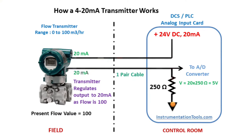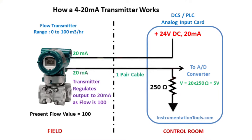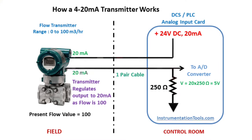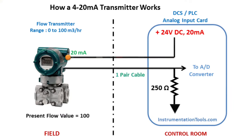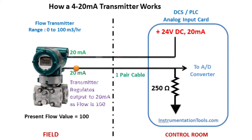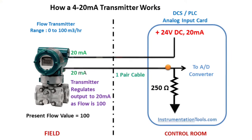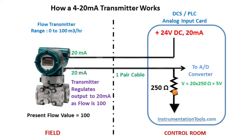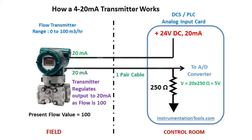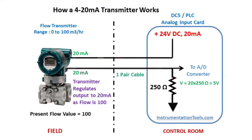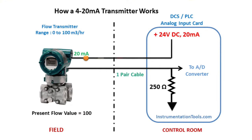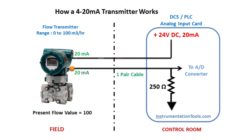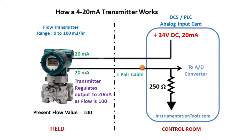Its output is conditioned and ready for use by the receiving electronics like PLC or DCS. The receiving electronics can be an indicator, controller, computer, PLC, DCS, etc. The term transmitter is commonly used with industrial process control instrumentation and has a more narrow definition than those of a sensor or transducer.